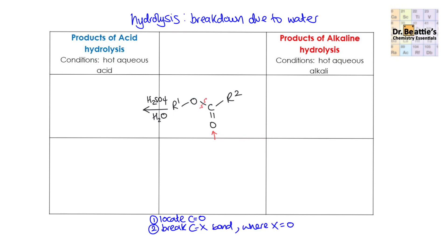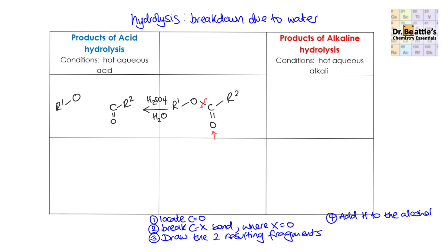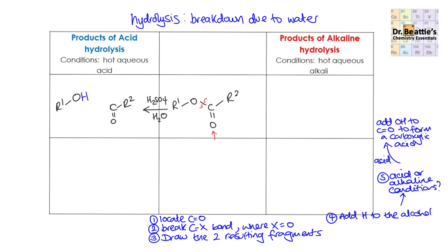I'm referring to it as a C-X bond because later on, when we look at polymers and hydrolysis of polymers, this atom can actually be nitrogen. The third step is to draw the two resulting fragments. Imagine you broke this bond and draw that fragment, then draw the other fragment to the side. You find the alcohol — you can see it's reminiscent of an alcohol with the oxygen there — and you add a hydrogen to it. Because we're under hot aqueous acid conditions, we then add an OH to the carbonyl-containing fragment. You always get a carboxylic acid fragment under acidic conditions.